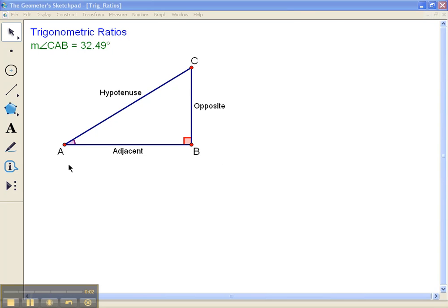Here we are on Geometry Sketchpad. We've got ourselves a right triangle and we're going to discover the three trig ratios based on this right triangle. So about this right triangle, notice we got angle B is a right angle here.